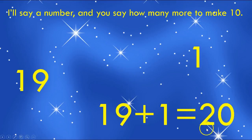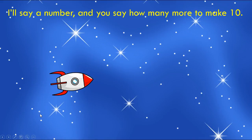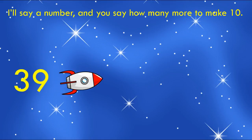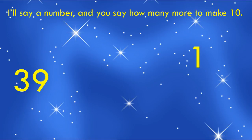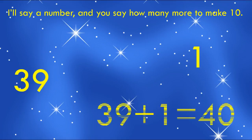Because the next 10 from 19 is 20. Our next number is 39. Write down how many more we need to make the next 10. Think: what is the next 10, and how many more do we need? Push pause and then push play when you're done. Did you say one? Excellent job. Now write the number sentence. Is this the number sentence you wrote? 39 plus 1 equals 40.